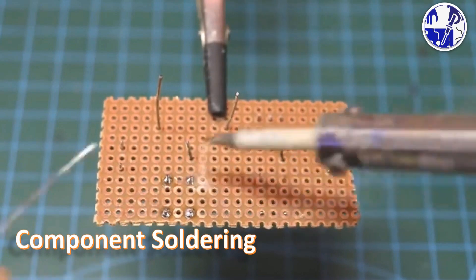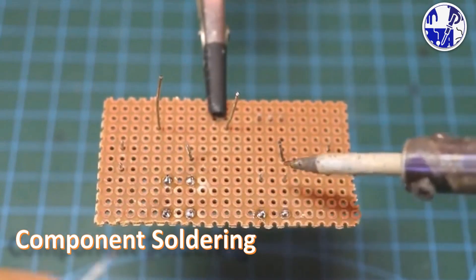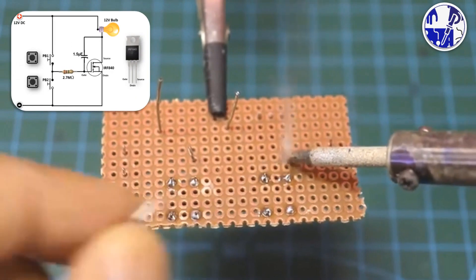After installing all the components on the zero board according to the circuit diagram, proceed to solder and connect the components as shown in the diagram.